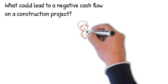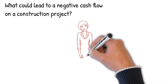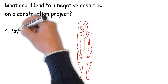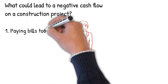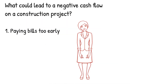So what are some of the things that could lead to bad or negative cash flow for a construction company? Paying bills too early. It may seem prudent to pay bills the moment they arrive, but doing so can leave a construction business low on cash or even create negative cash flow if they do not have cash coming in.